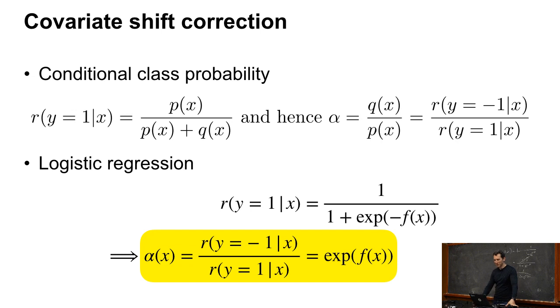And so now comes something really elegant. So let's look at the conditional class probability. The conditional class probability, P of Y equals 1, so remember we've taken equal mix between P and Q. It's just P over P plus Q. And so therefore, if I look at alpha, which is the ratio between Q and P, then all I need to do is I just need to look at the ratio of the corresponding conditional class probabilities. So you take the conditional class probability for minus 1 and the 1 for 1, take the ratio, and it actually turns out if you go through the algebra, I get that e to the f of x is exactly what I get.